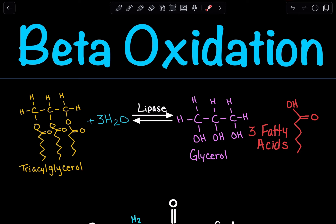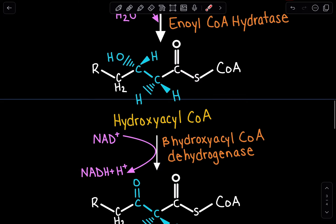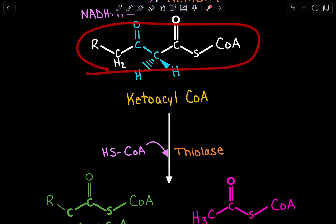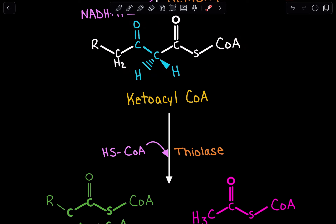Each round is composed of these four steps until all of the carbons in the fatty acid are used up. In this example, we used a general fatty acid that is completely saturated with trans-bonds. Beta-oxidation will differ if you have cis-bonds or unsaturated bonds, and we'll go over those differences in separate videos.